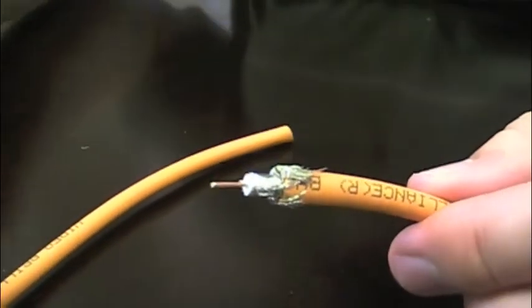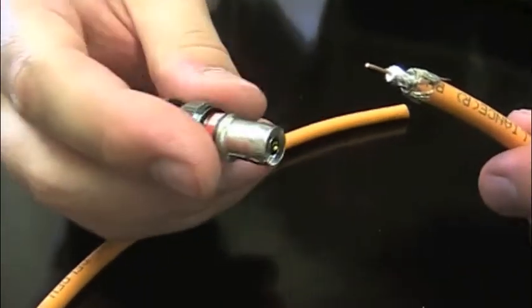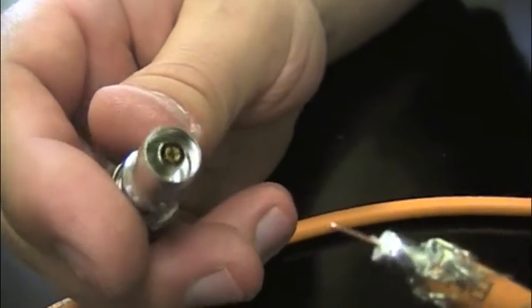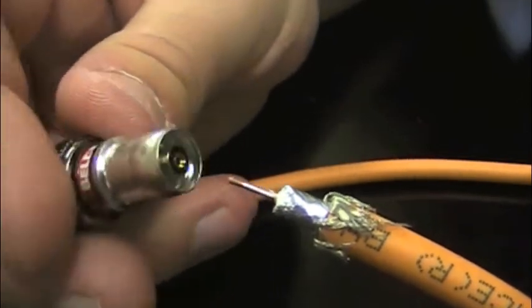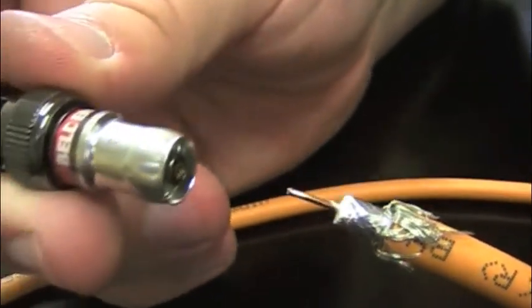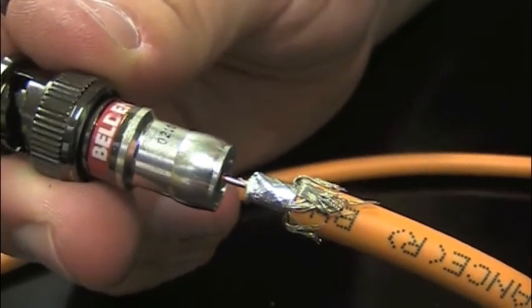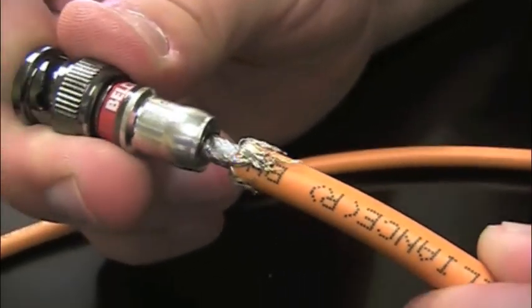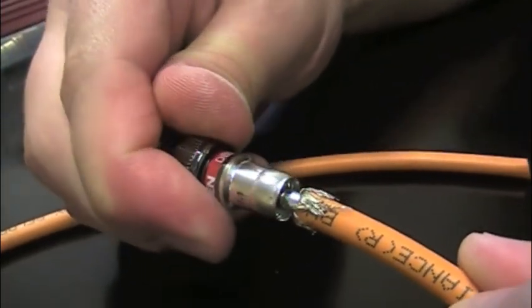So next thing, we'll go ahead and take our BNC connector. And as you can see here, one of the nice things about our Belden connectors is that you don't have a blind entry for the center pin. You actually can see the center pin right there. And what you're going to want to do is go ahead and, first step is to slide that right over the center conductor. And you'll actually feel it engage right before you start sliding the connector over the dielectric.